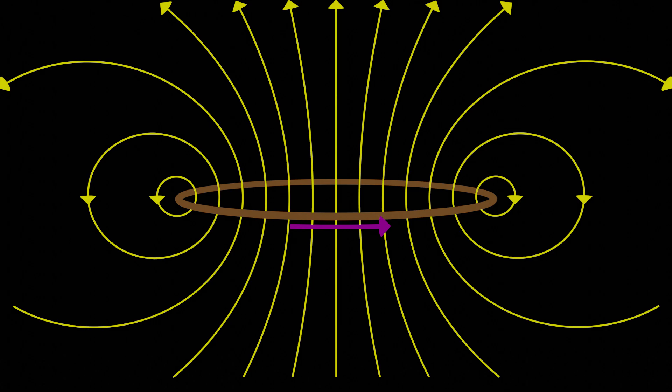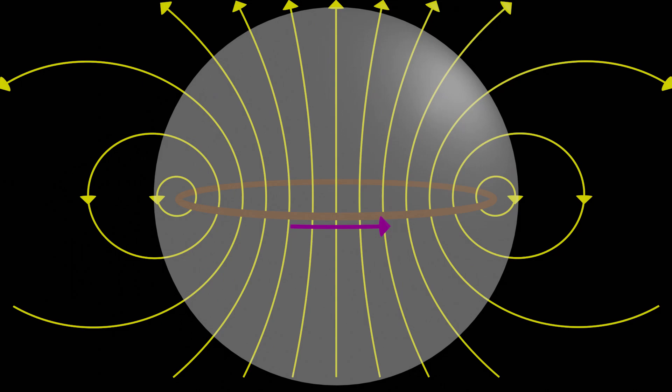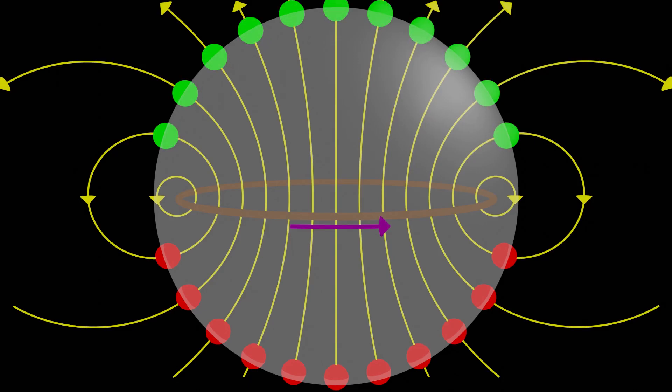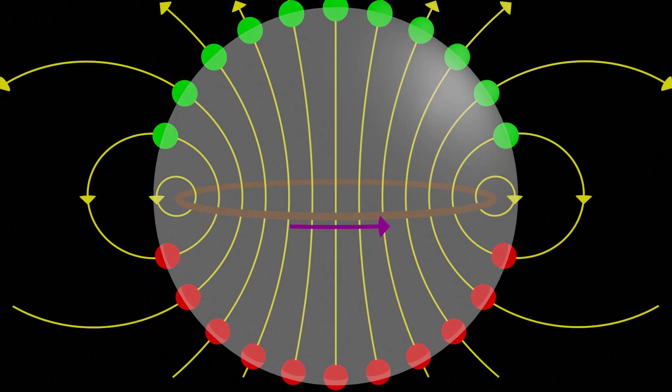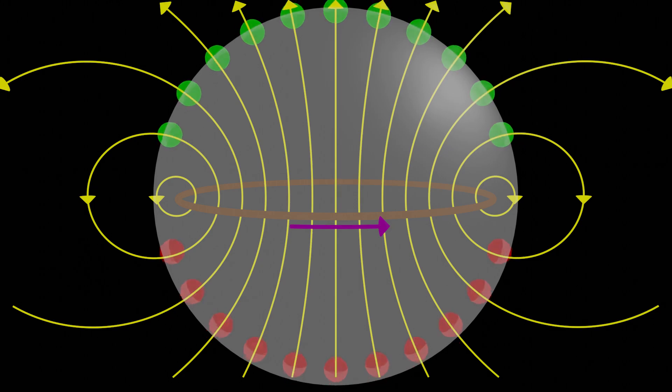So what if we imagine a spherical surface around the current loop like this? What can we say about the magnetic flux through this surface? It turns out every single magnetic field line going into the surface comes out of the surface at some point too. So the net magnetic flux through this closed surface here is zero. Isn't that strange? Even though we have a full-on current loop inside the surface, the total magnetic flux through the surface is zero.